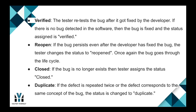Next state is Verified. The tester retests the bug after it got fixed by the developer. If there is no bug detected in the software, then the bug is fixed and the status assigned is Verified. Next state is Reopen. If the bug persists even after the developer has fixed the bug, the tester changes the status to Reopened. Once again, the bug goes through the lifecycle.